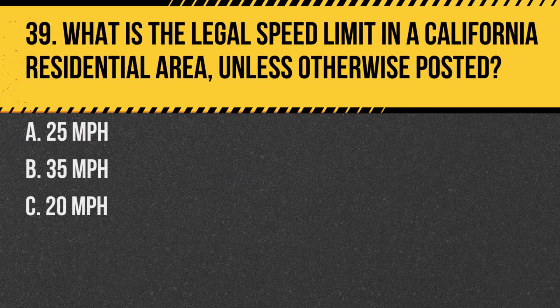Question 39. What is the legal speed limit in a California residential area, unless otherwise posted? A. 25 mph. B. 35 mph. C. 20 mph. Answer: A. 25 mph. The default speed limit in residential areas is 25 mph, unless otherwise posted.